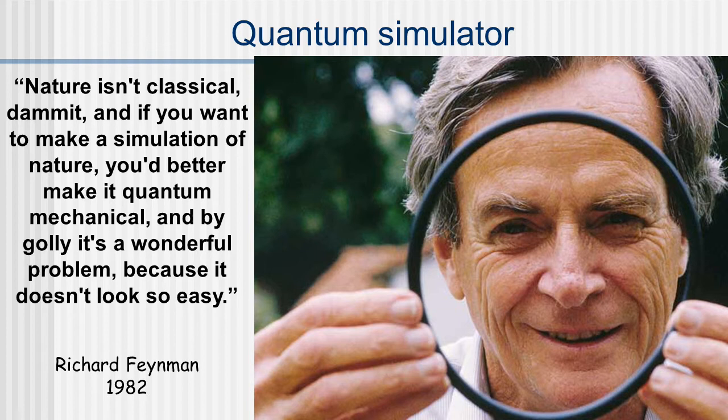This problem led Feynman to the idea that if you want to simulate a quantum system, you're going to need to build a computer that takes advantage of the laws of quantum mechanics. This was the original motivation for building quantum computers — to be able to make predictions of the properties of quantum systems. But what if you want to do something else? Are quantum computers only going to be useful for simulating other quantum systems, or can they be used more generally for other types of problems?